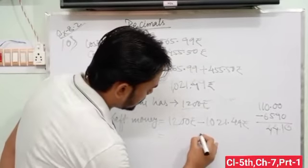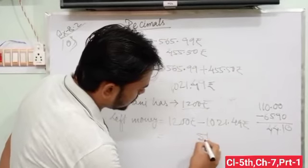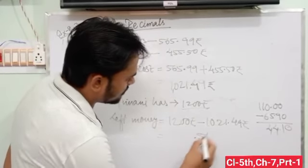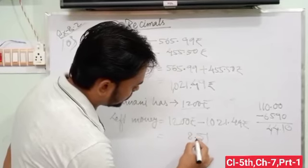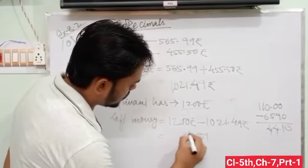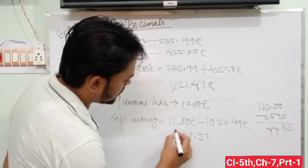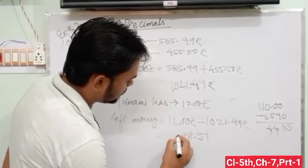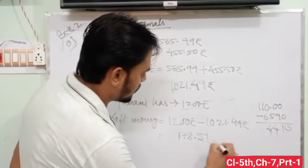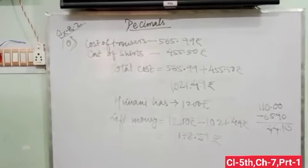The answer is 178.51 rupees. 9 minus 9 is 0, 0 minus 4 is borrow 10, 10 minus 4 is 6, 1 minus 2 borrow, 11 minus 2 is 9, 9 minus 0 is 9, 1 minus 1 is 0. 178.51 rupees.